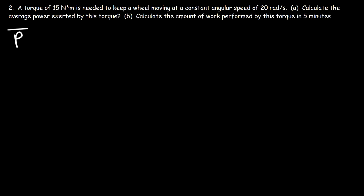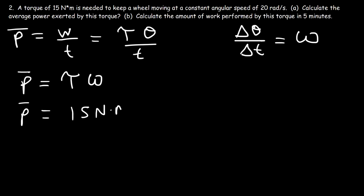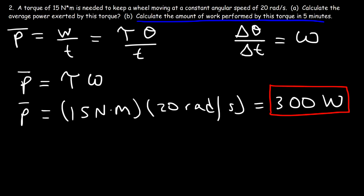Average power is work divided by time, and the work done is torque times angular displacement. The change in angular displacement divided by the change in time equals the angular velocity, so average power equals torque times angular velocity. In this example we have a torque of 15 Newton meters and an angular speed of 20 radians per second, so the average power is 15 times 20, which equals 300 watts.